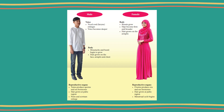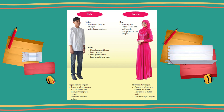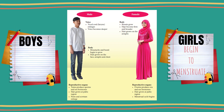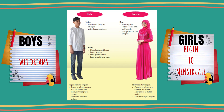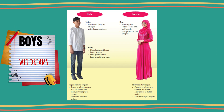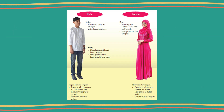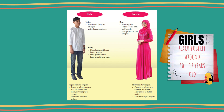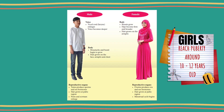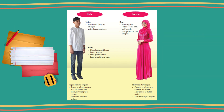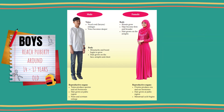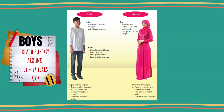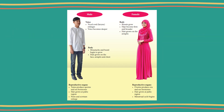During puberty, girls begin to mature and boys may have wet dreams. The average age for girls to attain puberty is 10 to 12 years old, while for boys it is about 14 to 17 years old.